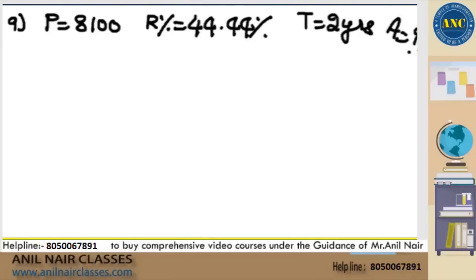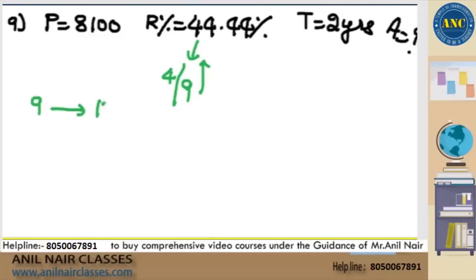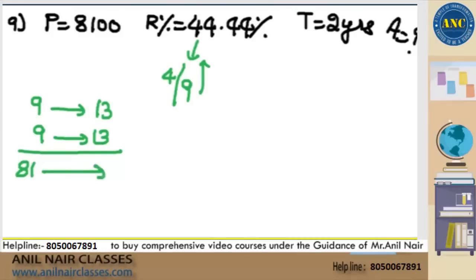Amount equivalent to how much? P is 8100, R is 44.44%, time period is 2 years. Same approach: 44.44% is nothing but 4 by 9. Original value is 9, I get 4 increase on 9, which is 13. Again original value is 9, 4 increase on 9, it is 13. So 9 nines are 81, and 13 thirteens are 169. This is the initial value and this is the amount.